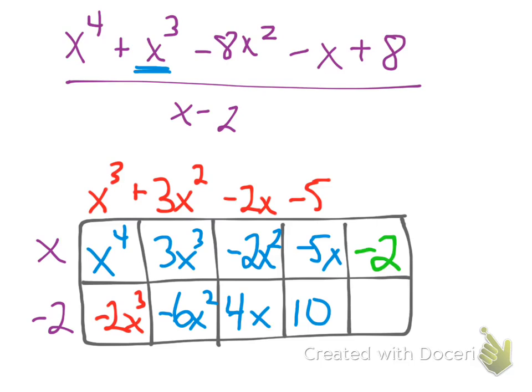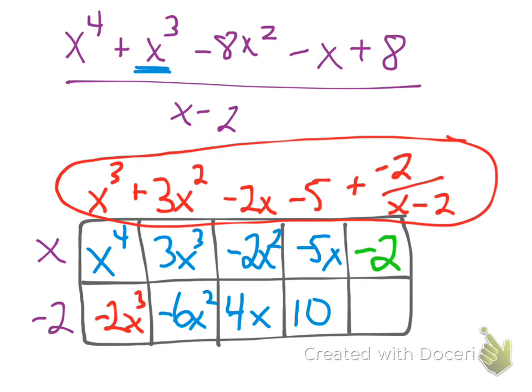So my answer then is x cubed plus 3x squared minus 2x minus 5 plus negative 2 over my divisor of x minus 2. You could also say this is a positive and that's a negative 2. So this is now the solution with a remainder. The only thing that changes is your last box does not match up, so you just continue for one more box.